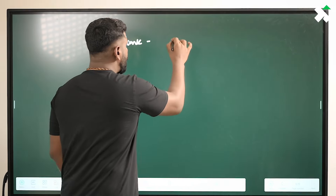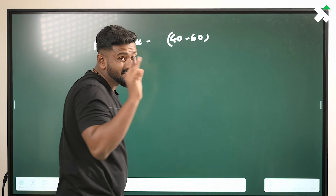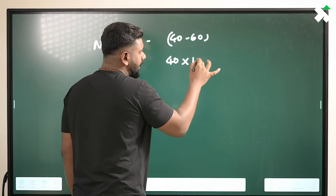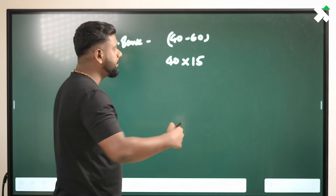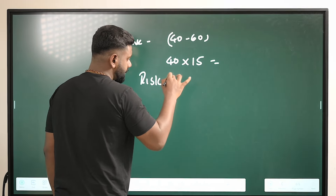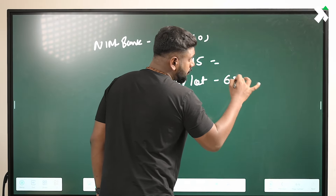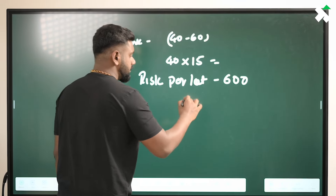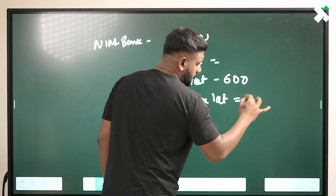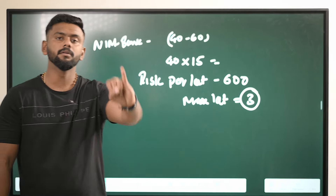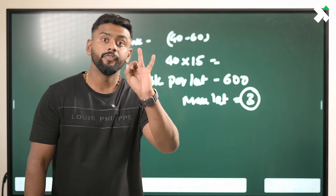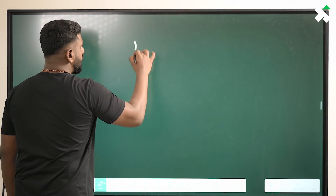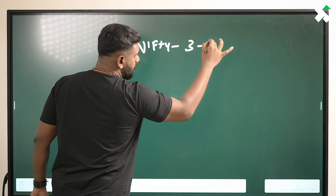Stop loss is like 40 to 60 points maximum. If we keep an average of 40 and we get a lot size of 15, that's per lot — risk per lot is like 600. We can take a maximum amount of lots — let's say 3 lots. So Nifty 3, Fin Nifty 2. If we keep an average, Nifty 3 to 4 lots.